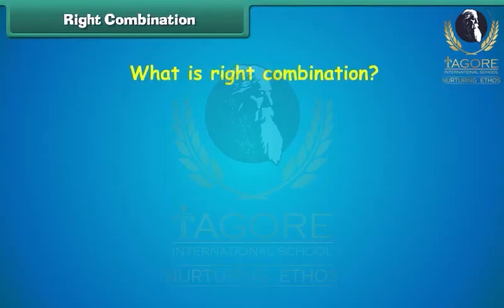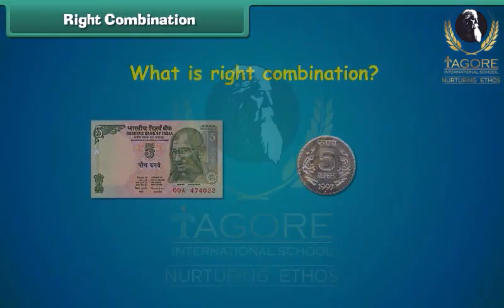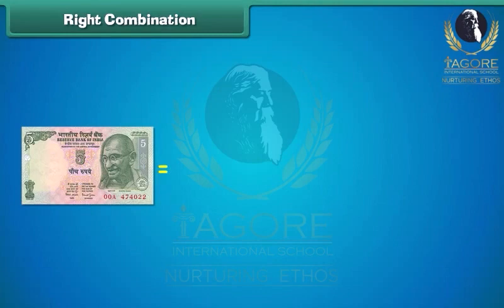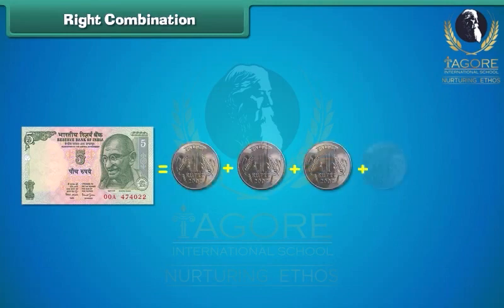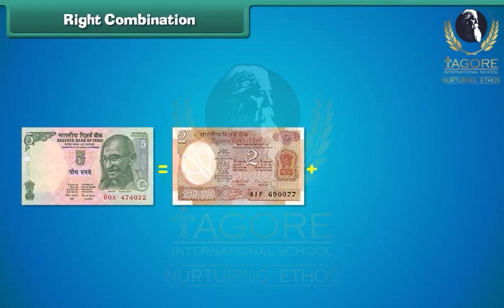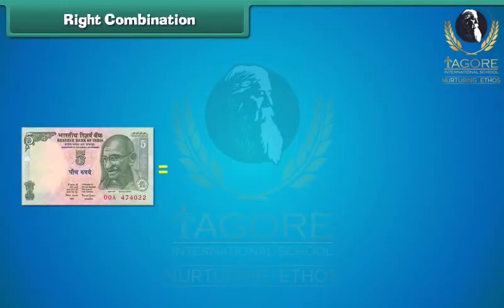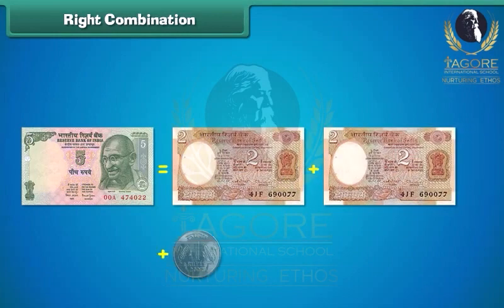Let us learn about some right combinations of notes and coins. One 5 rupee note is equal to the sum of five 1 rupee coins. One 5 rupee note is also equal to the sum of one 2 rupee note and three 1 rupee coins. Similarly, one 5 rupee note is equal to the sum of two 2 rupee notes and one 1 rupee coin. All these are the right combinations.